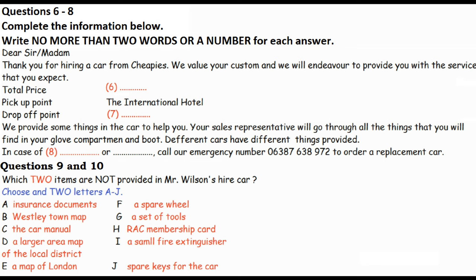First of all, your insurance documents will be in the glove compartment, along with a Wesley City map and the car manual. On the back seat, there will be a larger area map of the local district. If you need a map of any other place, like London, then give us a call and we'll make sure it's there. No, I won't need that.